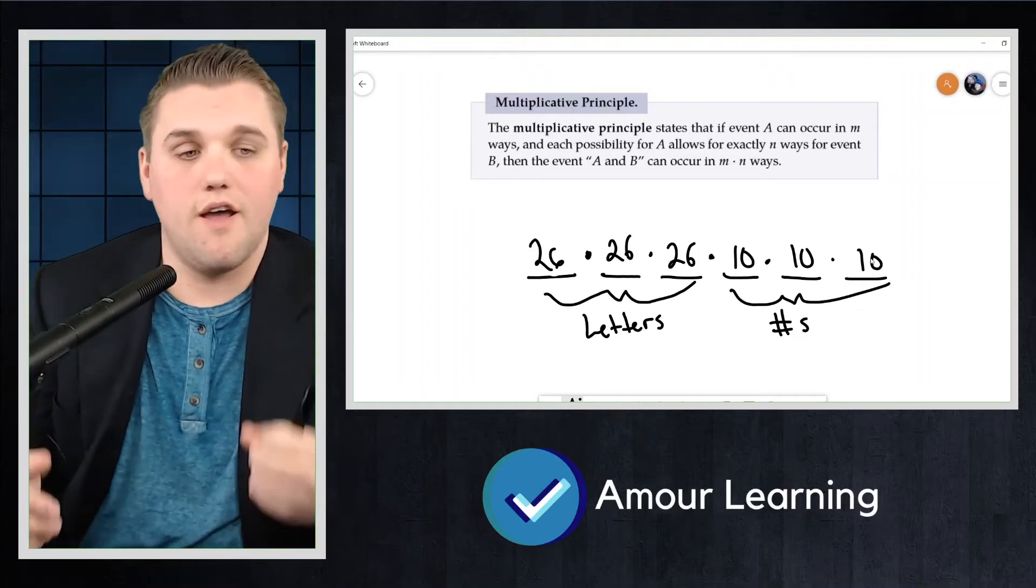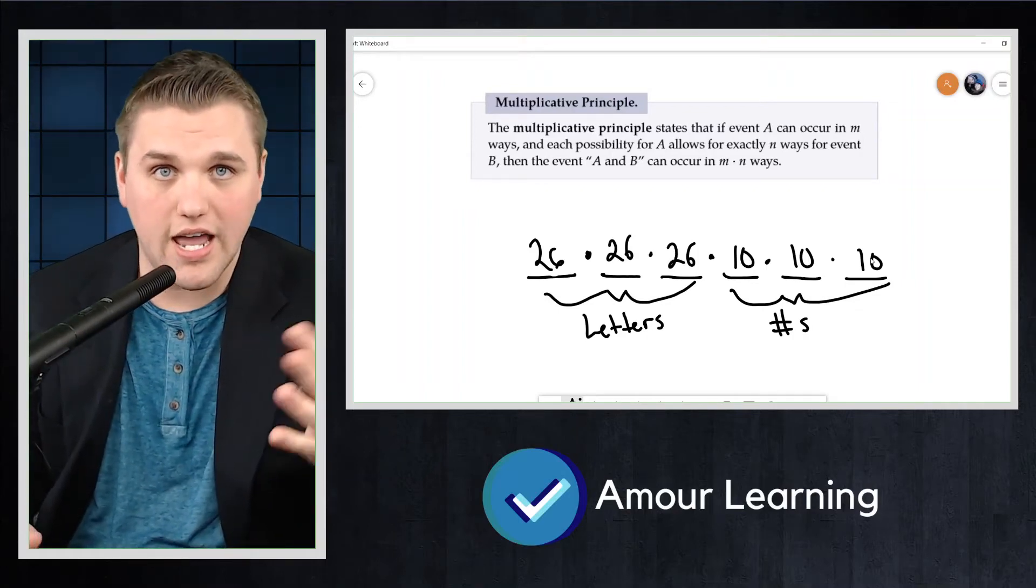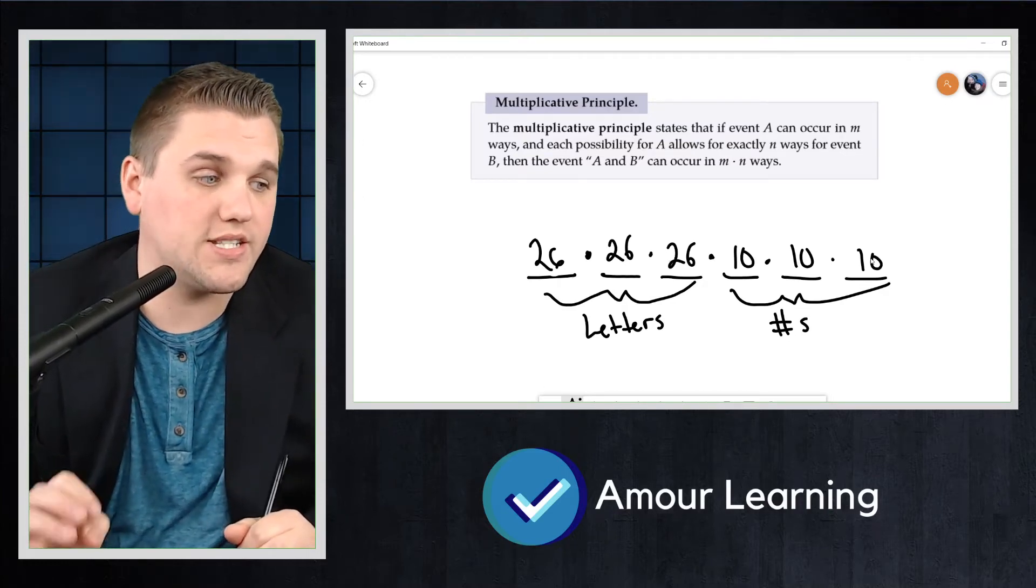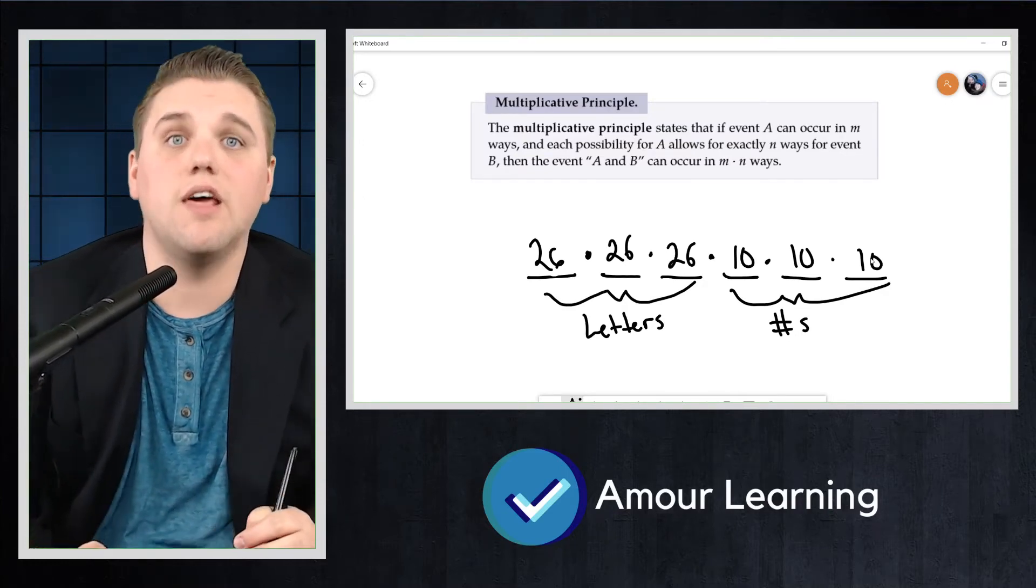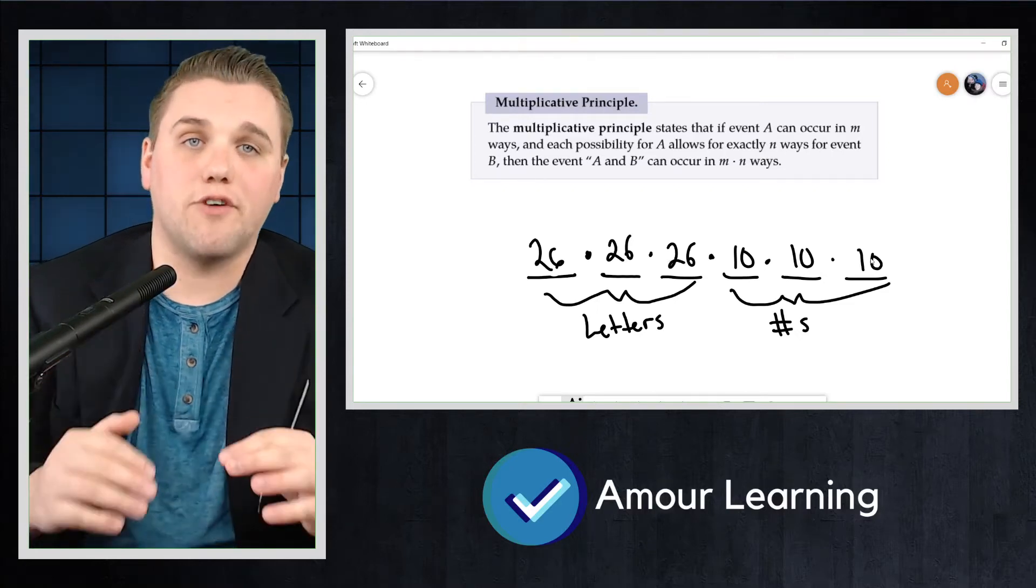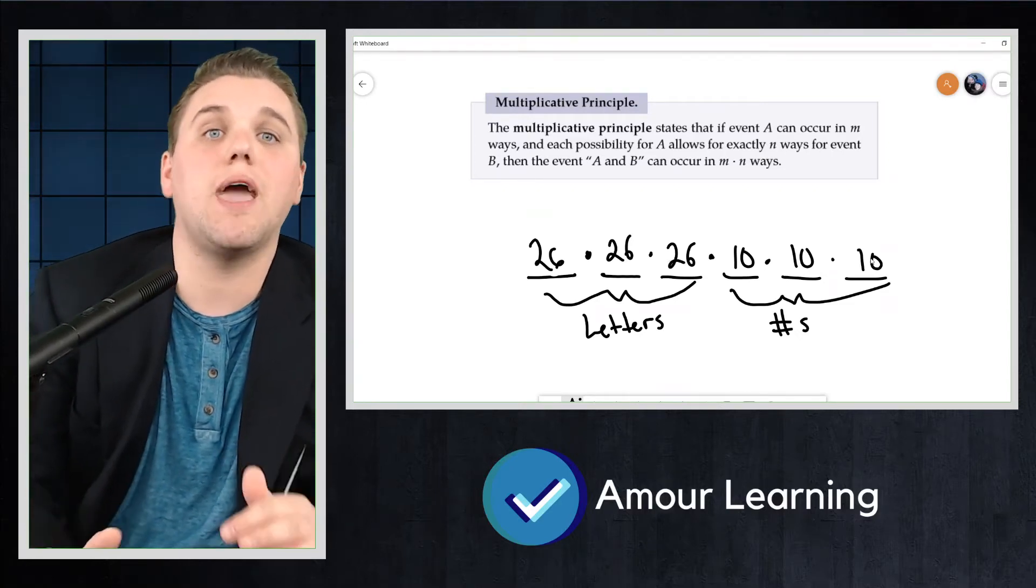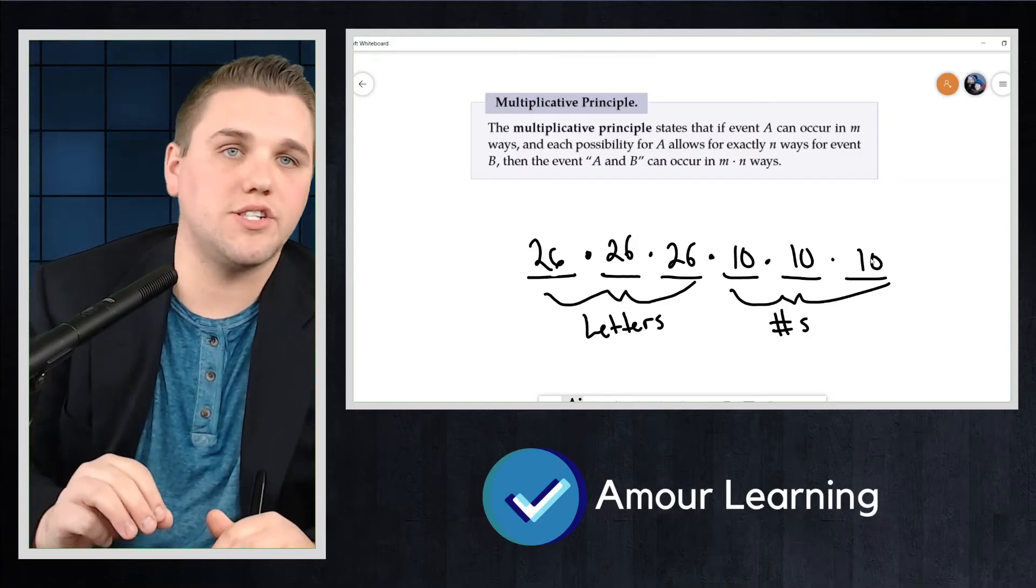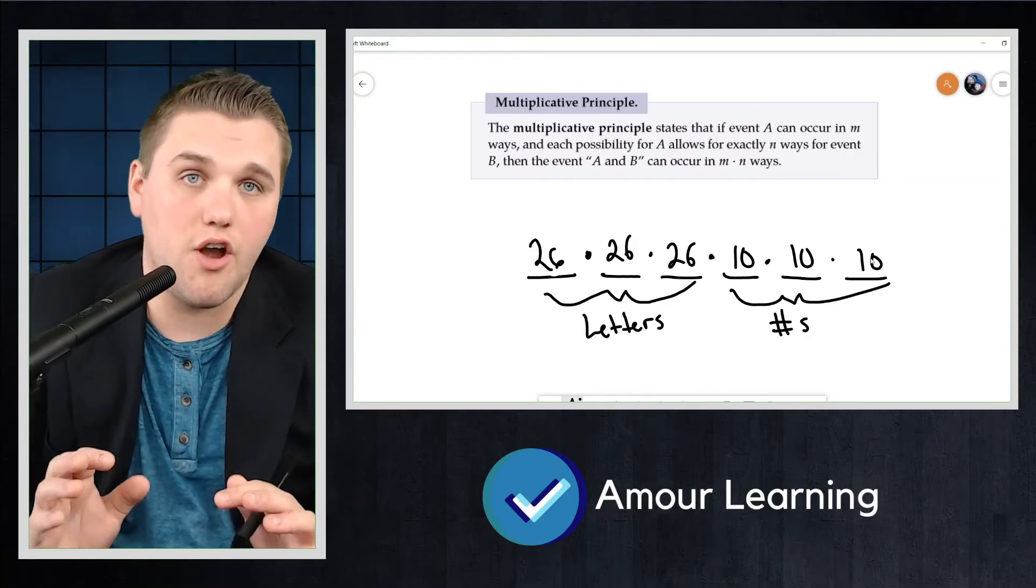And then there are 10 for this one and 10 for that one because there are only 10 digits: 0, 1, 2, 3, 4, 5, 6, 7, 8, and 9. And so 26 times 26 times 26 times 10 times 10 times 10 represents all of the different possible ways you can make a license plate where the first three are letters and the last three entries are numbers.